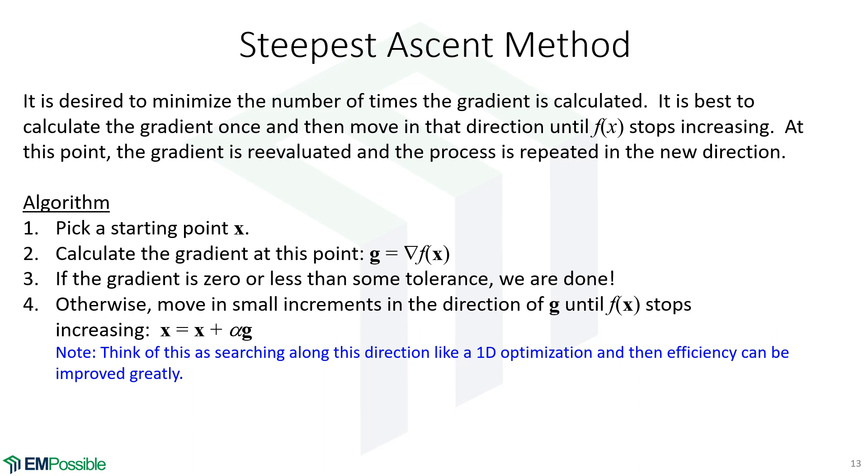Otherwise, we're going to move in small increments from our guess x in the direction of the gradient. And how far we go, we're controlling through this parameter alpha. And I have a note here to remind us, if we look at this as a 1D optimization, that's probably the best way to move along that line, although it increases the sophistication of your code. And then we go back to step two until that gradient is sufficiently small that we say that we're done. And that's it. That is the steepest ascent method.